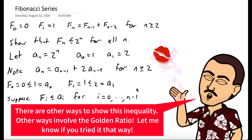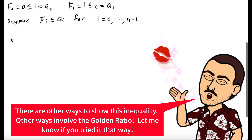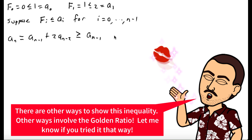This is our inductive hypothesis. We want to show this implies aₙ is greater than or equal to fₙ. Recall aₙ equals aₙ₋₁ plus 2aₙ₋₂. Since aₙ₋₂ is positive, this is greater than or equal to aₙ₋₁ plus aₙ₋₂, which by induction is greater than or equal to fₙ₋₁ plus fₙ₋₂, which equals the nth Fibonacci.